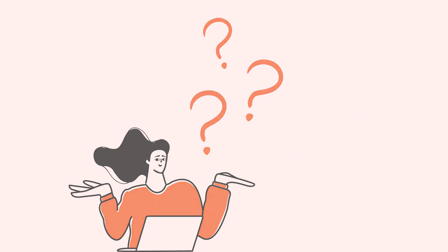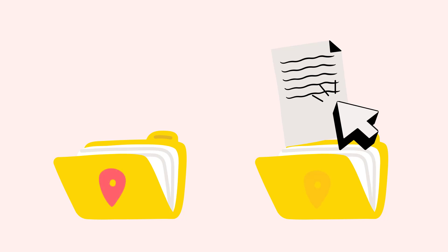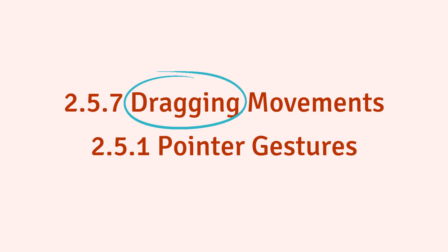So what is considered a dragging movement? Let's say we want to move a file from one folder to another with a mouse. First we click and hold down the left mouse button to pick up the file. Then we drag the file across the screen, and finally we release the mouse button once the file reaches its destination. While moving the file we can travel on any path we want — only the start and end points matter. This is what separates dragging movements from path-based gestures, which are covered under Success Criterion 2.5.1 pointer gestures.